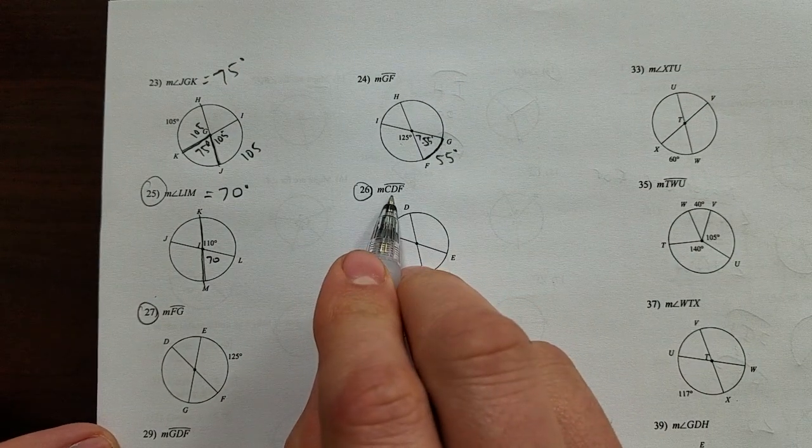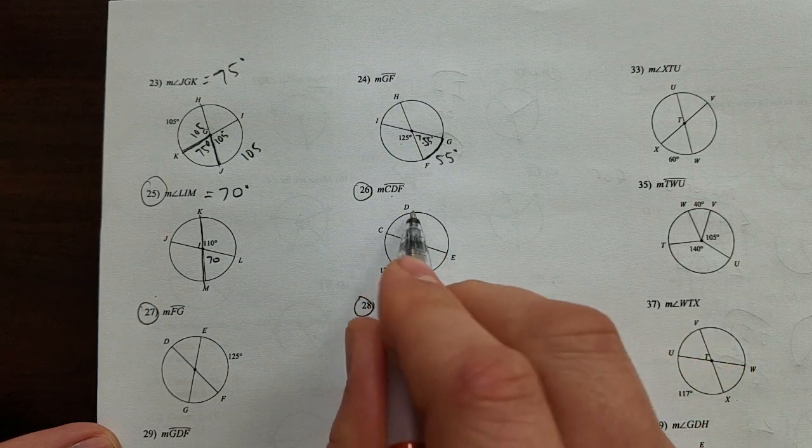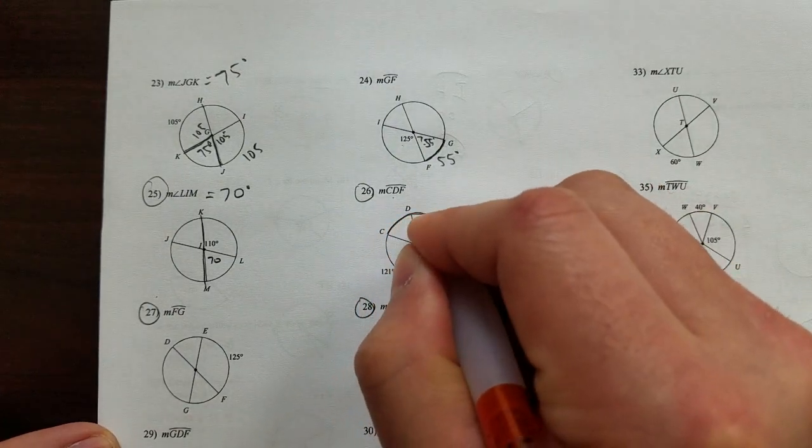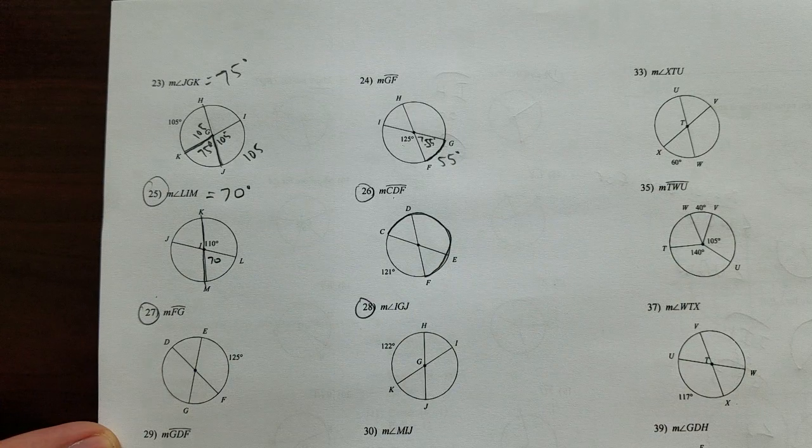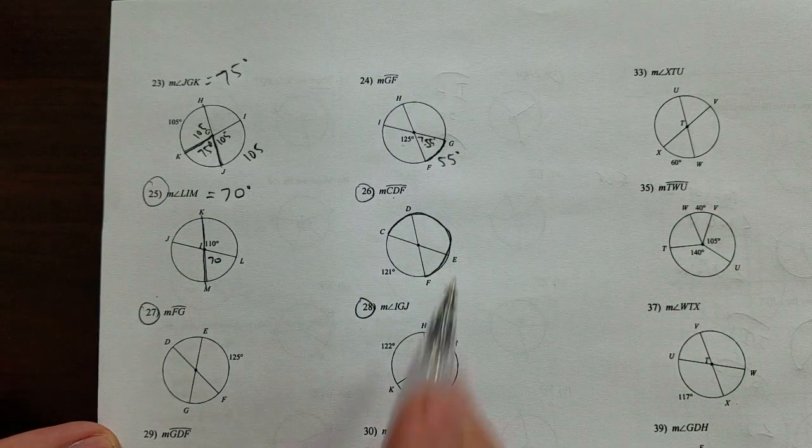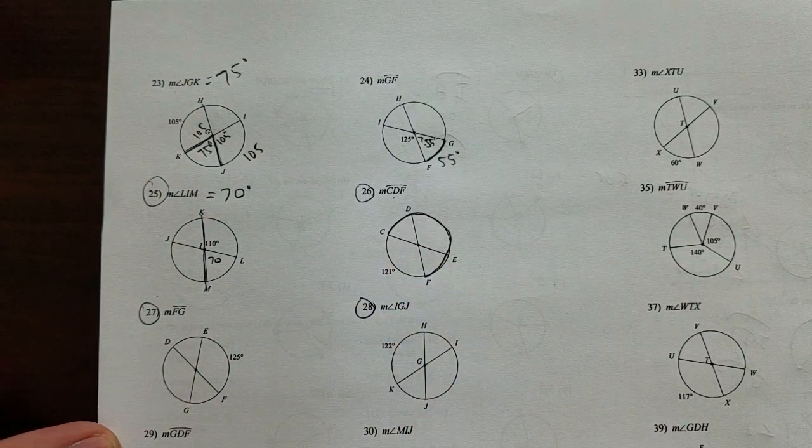CDF, that's a major arc because it's got the third letter in it, so CDF is going to go all the way around here. All right, we have a pretty quick way to do this one. The total degrees in a circle is 360.